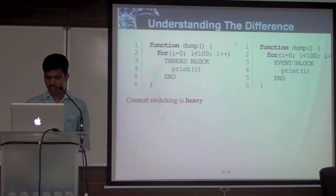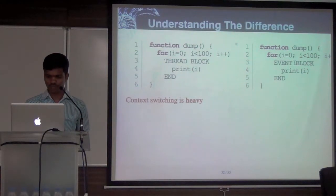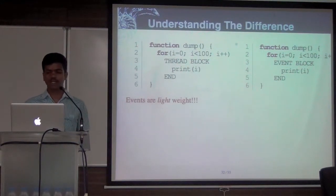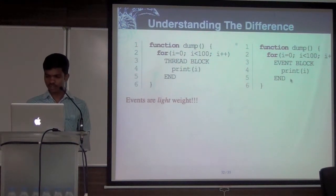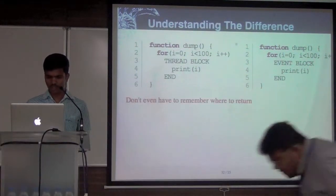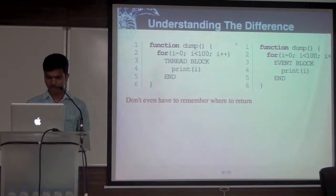But with the event loop, that's not the case. Because there is no context switch — events are lightweight. We've seen that it simply calls another function. That is what an event does.